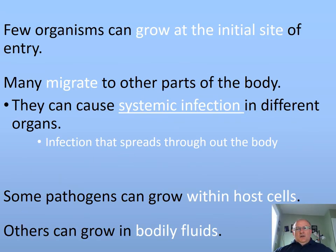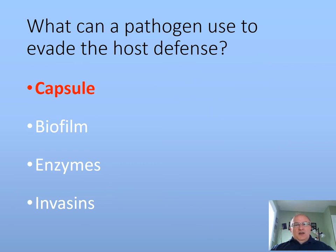At this point, infection has occurred and disease has started. Some organisms will grow at the initial site; others might migrate to other parts of the body, even entering the blood, which is a good route for pathogens to travel from one organ to another — in that case, we call it a systemic infection. Some pathogens stay inside host cells, which is great for avoiding the immune system; others grow in bodily fluids. The longer a pathogen stays in the host, the more chances the host will recognize it and mount an immune or defense response against it.